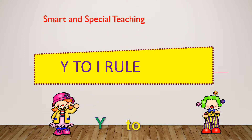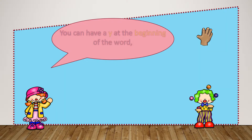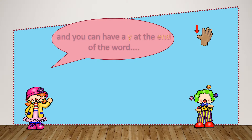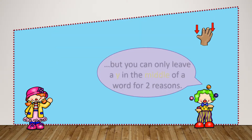Smarter Special Teaching presents the Y to I rule. You can have a Y at the beginning of a word and you can have a Y at the end of a word. But you can only leave a Y in the middle of a word for two reasons.